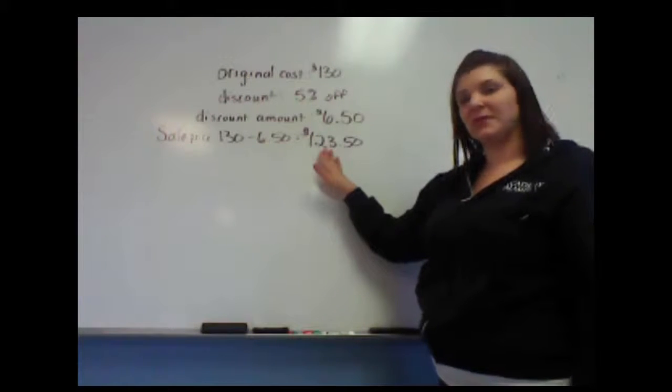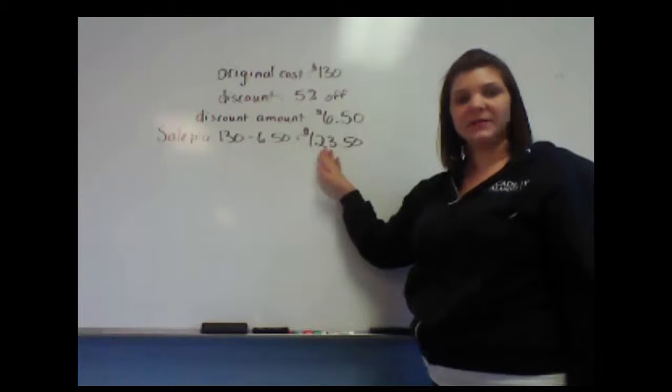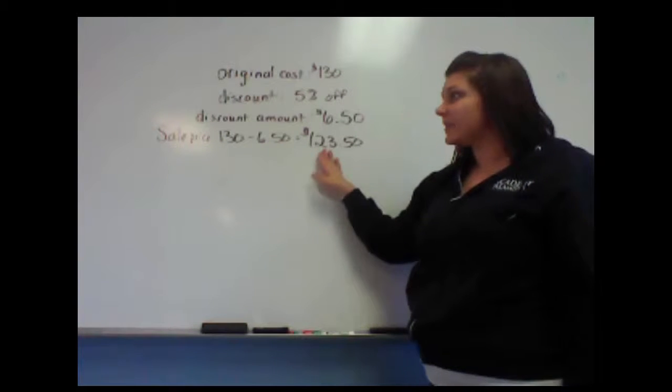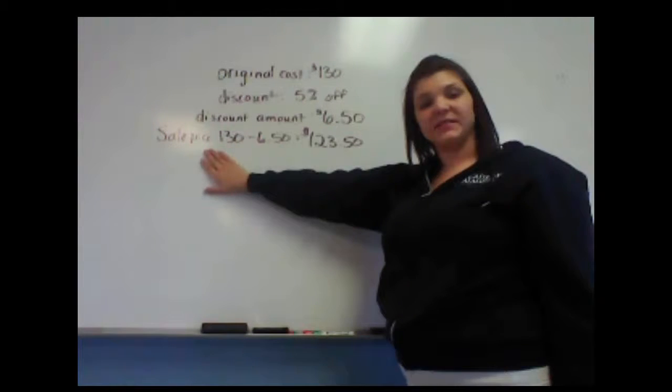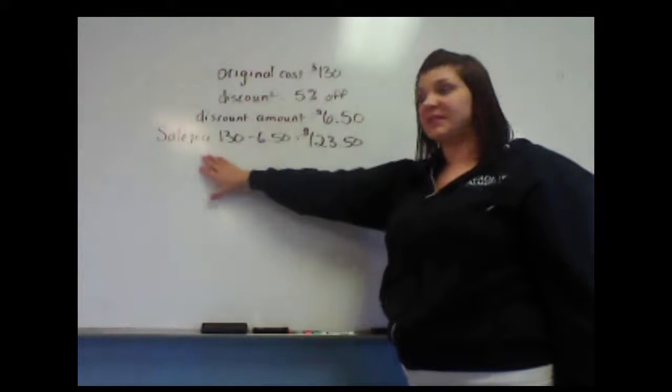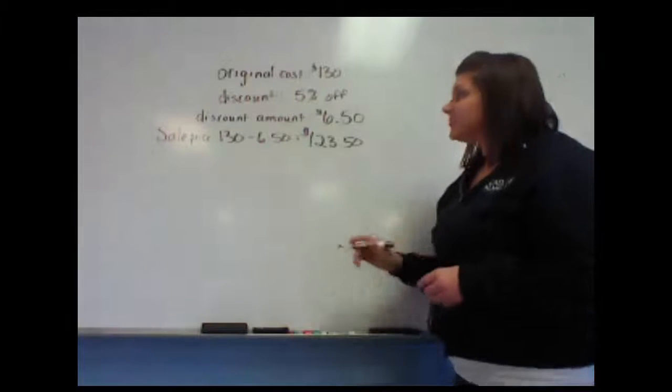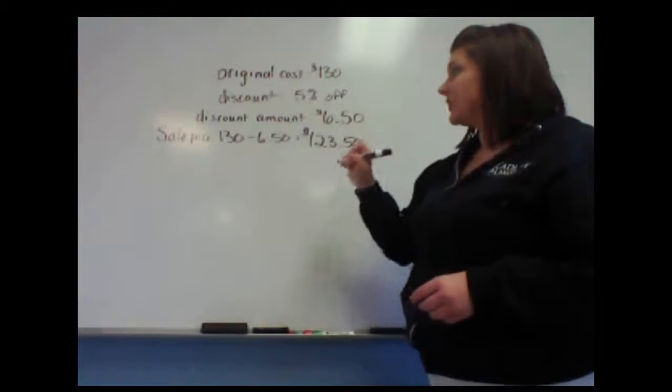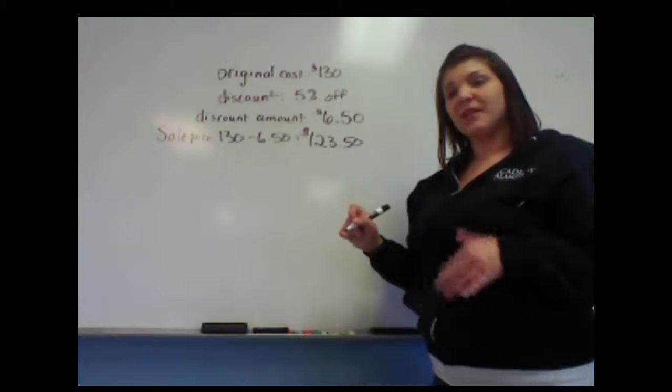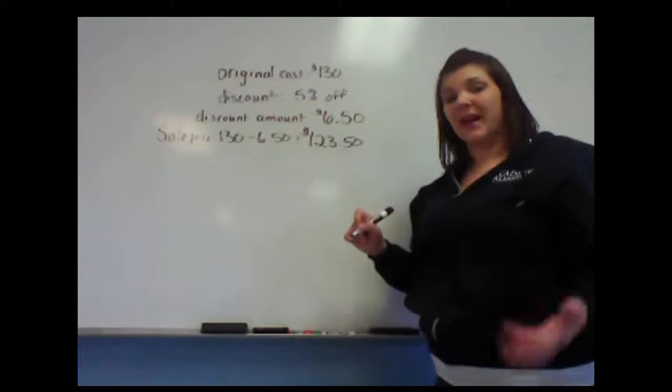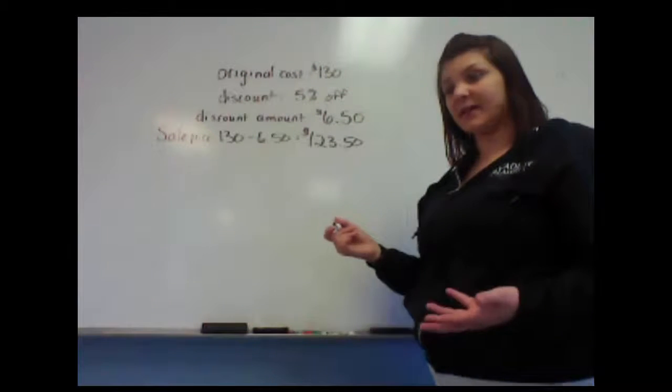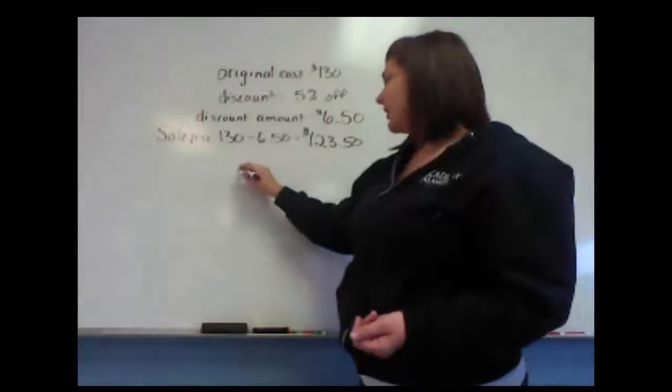So we get $123.50 for the sale price. So the other method for finding that new sale price is by using a single multiplier. When I say single, I mean it's one step to figure out what that sale price is. So we know that our discount is 5% off, so that means we're keeping or we're going to be paying 95% of the price.